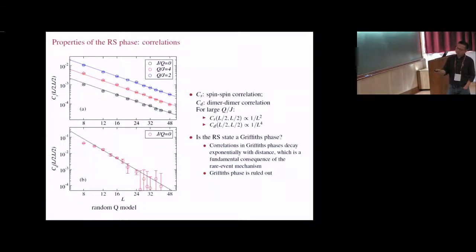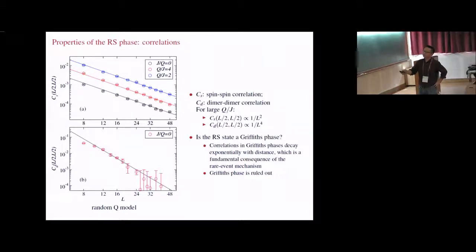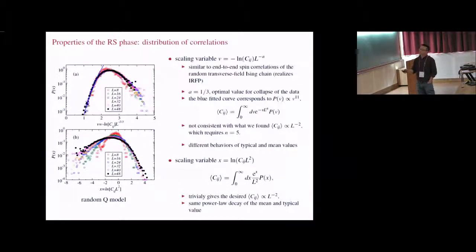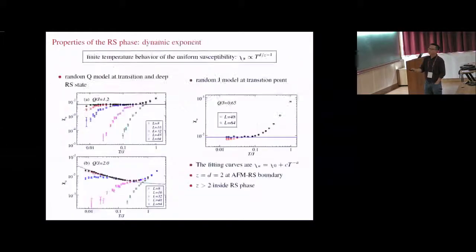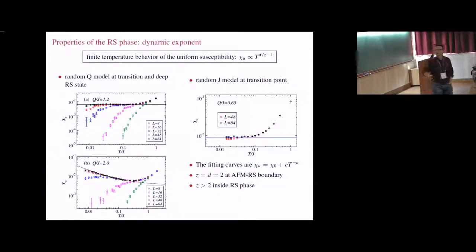We have also studied the correlations. Here Cs is the spin-on spin correlation. We find very good algebraic decay. And the power is 2. Here it is the dimer-dimer correlation. The data is less good, but suggesting a power 4. This power law rules out the possibility that this state is a gapped phase.